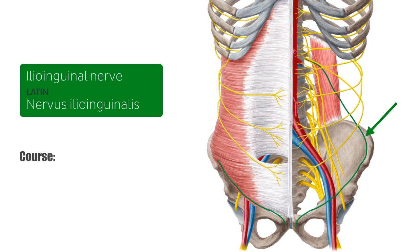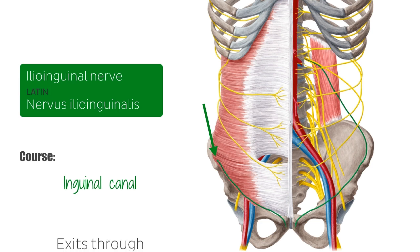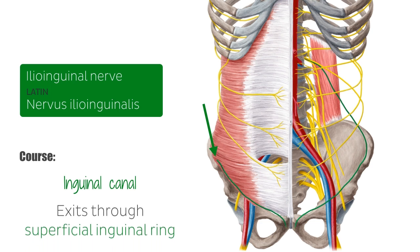It then pierces the transversus abdominis and the internal oblique muscles to enter the inguinal canal. The ilioinguinal nerve then travels through the inguinal canal and exits at the superficial inguinal ring alongside the spermatic cord in males or the round ligament in females. The superficial inguinal ring is just about here.